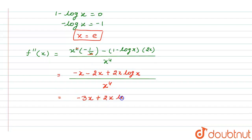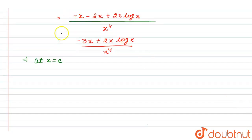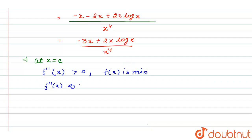So f''(x) = (−3x + 2x·log x) / x⁴. We know the condition: if f''(x) > 0 then f(x) is a minimum; if f''(x) < 0 then f(x) is a maximum. We now check at x = e whether the function is maximum or minimum.